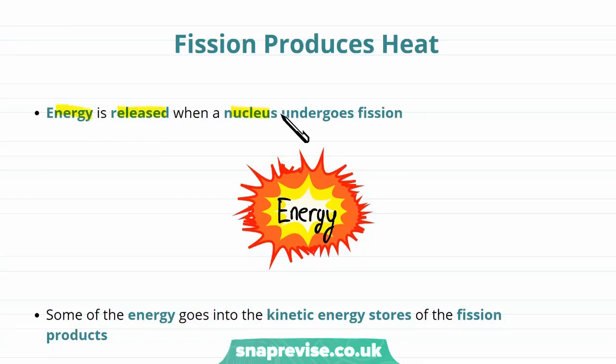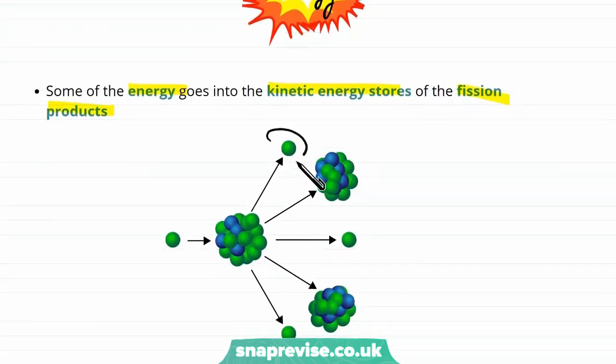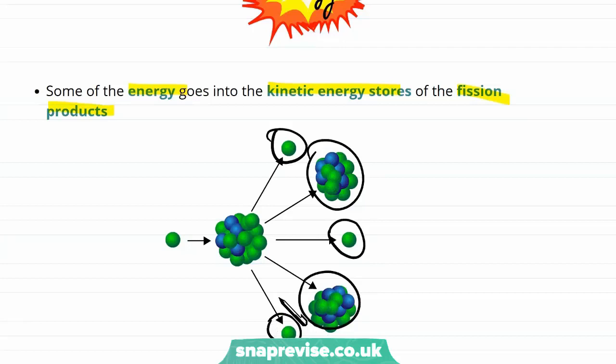So energy is released when a nucleus undergoes fission. Some of the energy goes into the kinetic energy stores of the fission products. By fission products, we mean all of the things that we end up with once fission has occurred. So some of the energy from fusion goes into the kinetic energy of these particles and fragments.